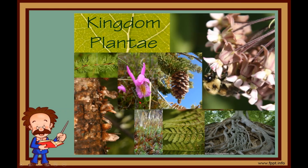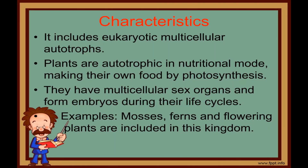Kingdom Plantae — mainly all are autotrophs and some are semi-autotrophs. For example, insectivorous plants like Venus Flytrap and Pitcher Plant. Some heterotrophic parasitic members are also present in this kingdom, for example, Cuscuta. It includes eukaryotic multicellular autotrophs. Plants are autotrophic in nutritional mode as they make their own food by the process of photosynthesis. They have multicellular sex organs and form embryos during their life cycles. For example, mosses, ferns, and all flowering plants are included in this kingdom.